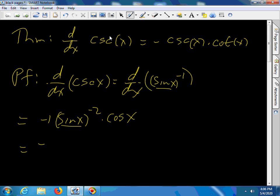So we have a negative, cosine x, and sine, so it's going to be sine squared x in the bottom. We can think of this as cosine x over one of the sine x's times one over the other sine x.